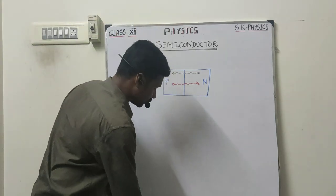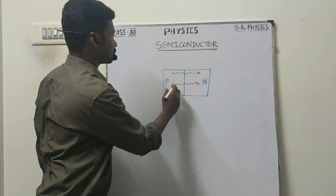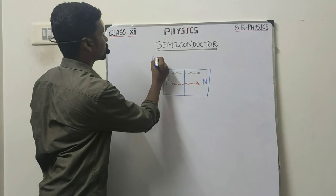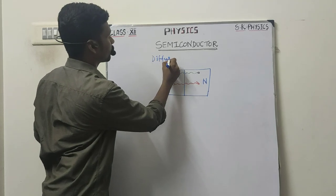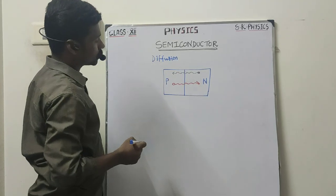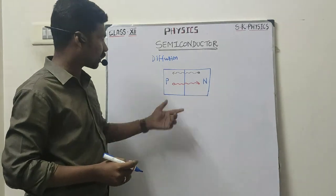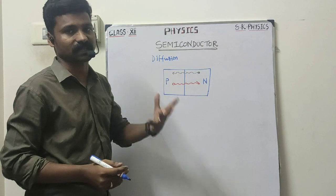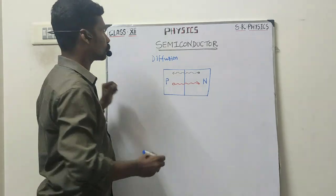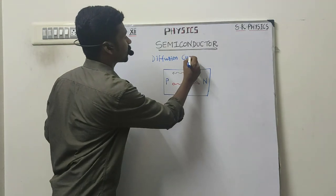So you know very well this name is known as diffusion. That is diffusion. So here the movement of charge carriers across the junction causes some current. The current is known as diffusion current.